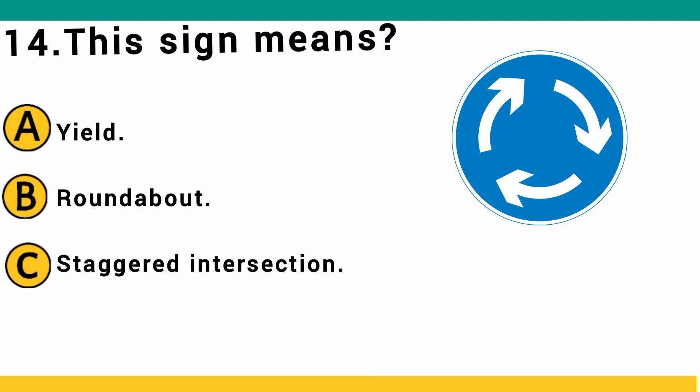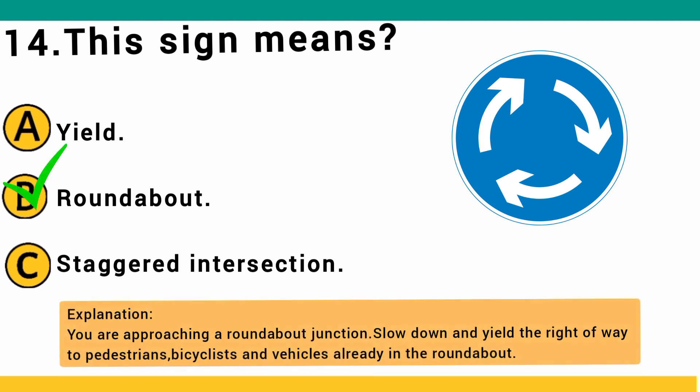This sign means: A) yield, B) roundabout, or C) staggered intersection. The correct answer is B: roundabout. You are approaching a roundabout junction — slow down and yield the right of way to cyclists and vehicles already in the roundabout.